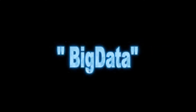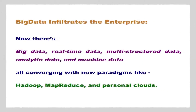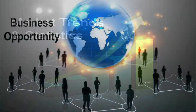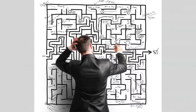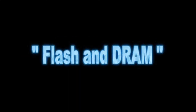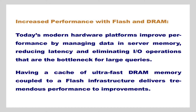The next trend is big data. Big data infiltrates the enterprise — capturing and analyzing all data including unstructured, semi-structured, and traditional data allows managers to gain a more thorough understanding of their business. There is now big data, real-time data, multi-structured data, and machine data all converging with new paradigms like Hadoop MapReduce and personal clouds. When properly analyzed, this information can provide unique knowledge into market trends, business opportunities, maintenance cycles, and many other business issues, enabling organizations to operate more efficiently and competitively.